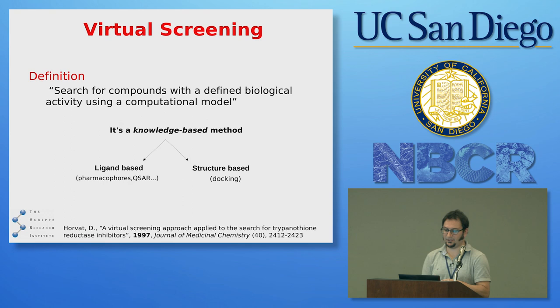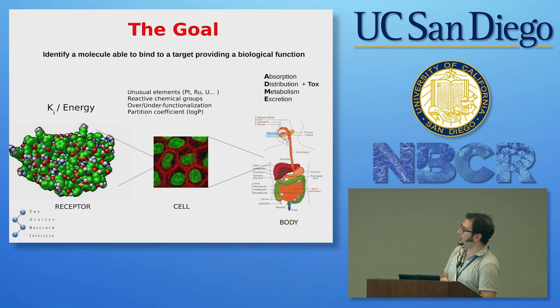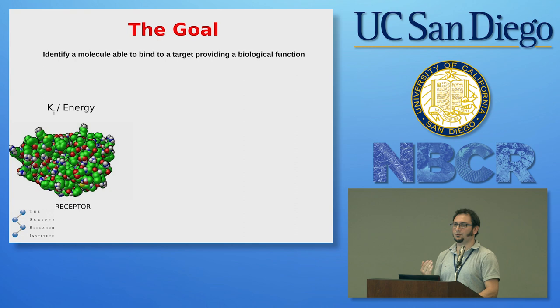If you're lucky and if you did things properly, one or more active compounds can show up in your assay. The definition of a virtual screening is: a search for compounds with a defined biological activity using a computational model. It is a knowledge-based method. A virtual screening requires some prior knowledge — either on the ligands, so you have ligands with a given biological activity and you extract essential chemical features, or it can be structure-based, which is what we're going to discuss today.